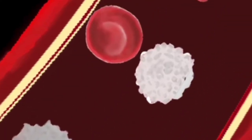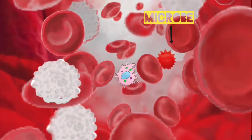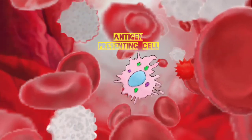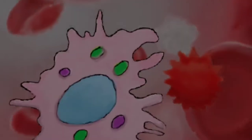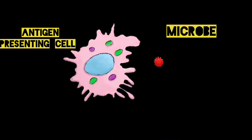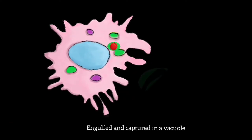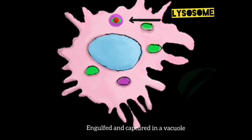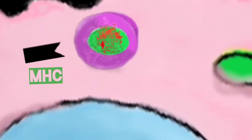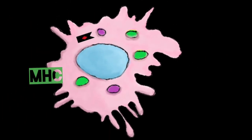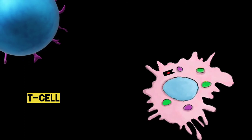A close-up into our blood vessel: if a microbe is encountered, an antigen-presenting cell like a macrophage comes to engulf it. This is taken up by a lysosome and broken into antigenic particles, which are recognized by MHC molecules in the cell. This antigen, carried by MHC, is recognized by a T-cell via their T-cell receptor.